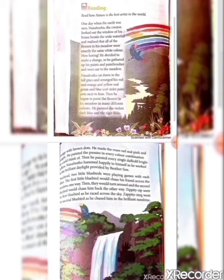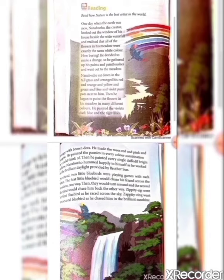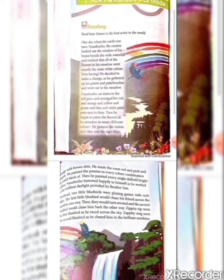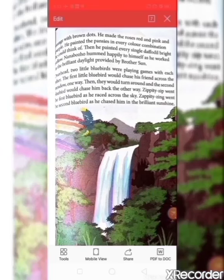He painted the violets dark blue and the tiger lilies orange with brown dots. He made the roses red and pink and purple. He painted the pansies in every color combination he could think of, then he painted every single daffodil bright yellow. Nanbojo hummed happily to himself as he worked in the brilliant daylight provided by Brother Sun. The creator painted the different flowers with a variety of colors and made the earth beautiful.